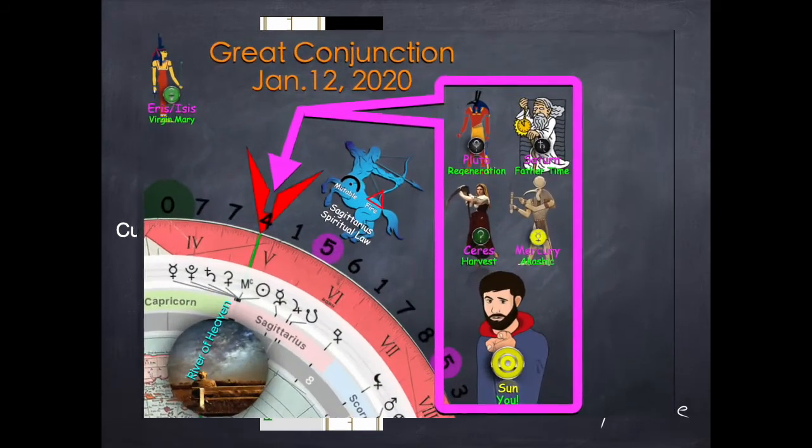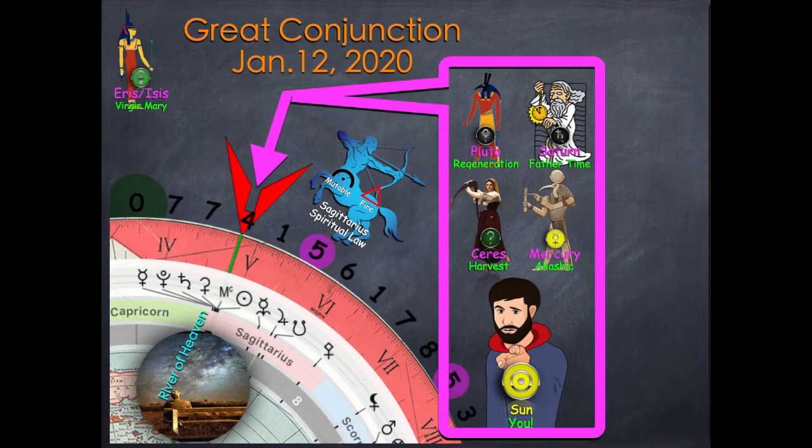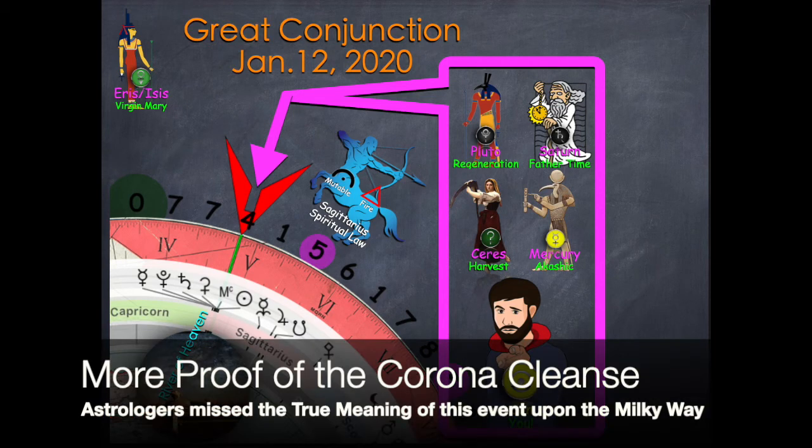This was the peak alignment of Pluto-Saturn with Sarah's Mercury and you, the Sun, on the River of Heaven, a.k.a. the Milky Way. Remember this, Sarah is the harvester, Mercury, the Akashic record keeper. Both sit on the harvest position in Libra, weighing of the heart ceremony, and are here at the start of the Corona Chakra Cleanse.